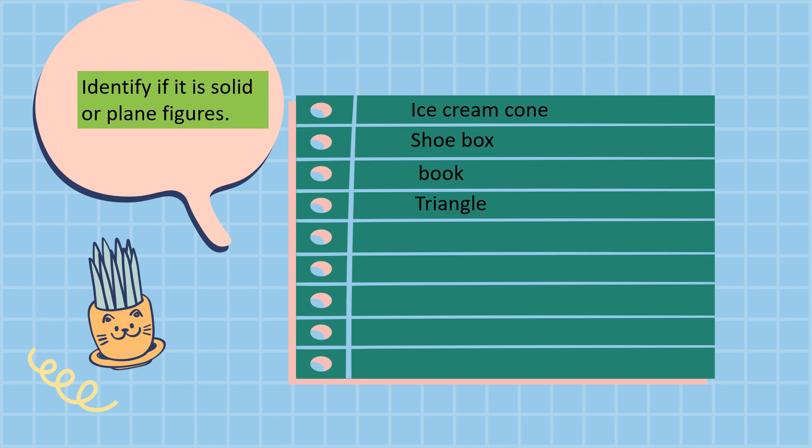Triangle. That's plane. A ball. That is a solid figure, and that is a model of sphere. A circle is a plane figure.